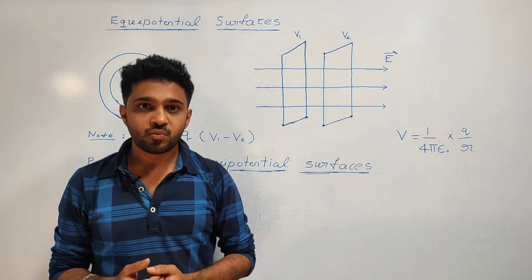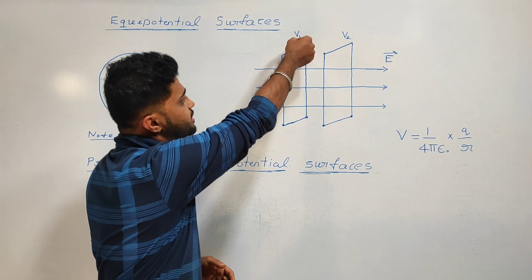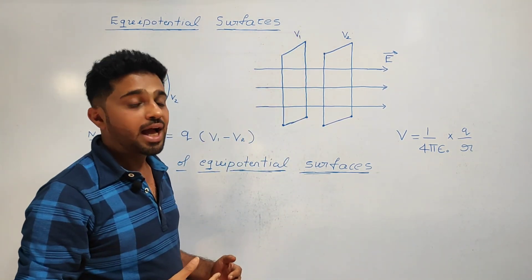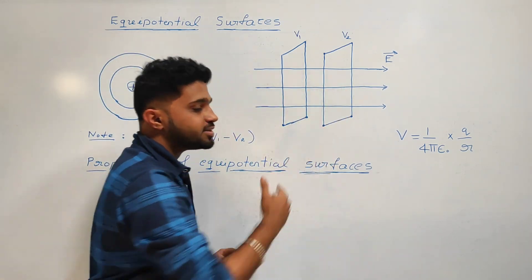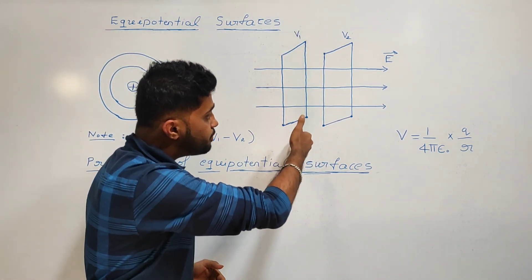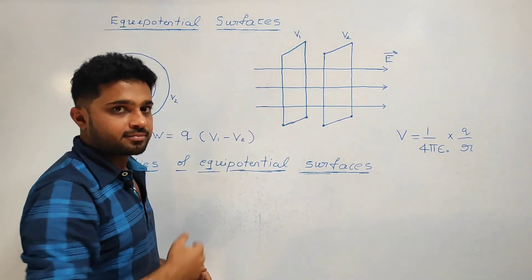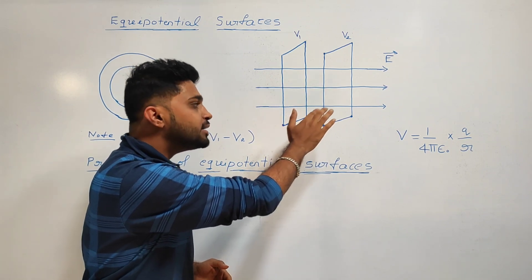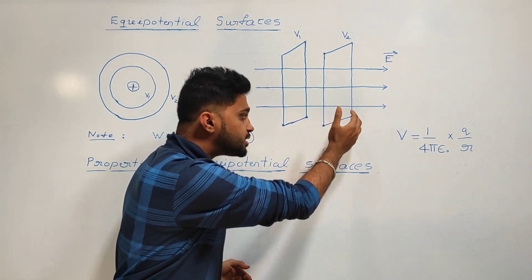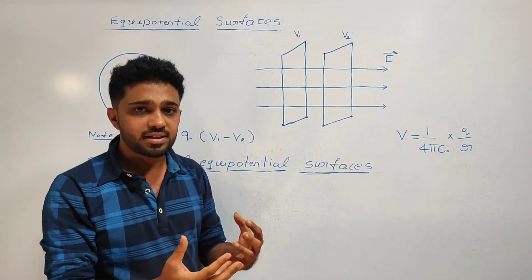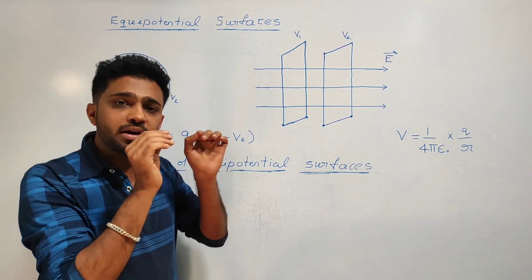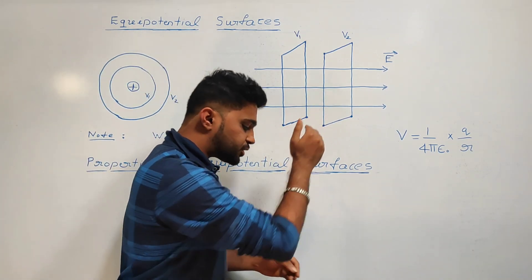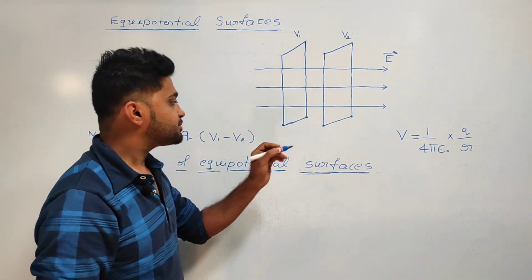For a uniform electric field, the equipotential surfaces are drawn at particular distances. We draw one equipotential surface, then another equipotential surface — so we have two different equipotential surfaces, which we label A and B.